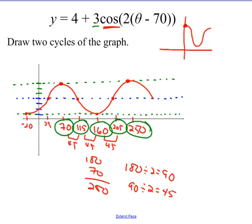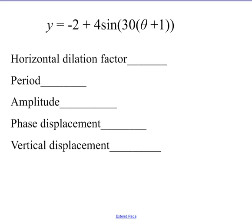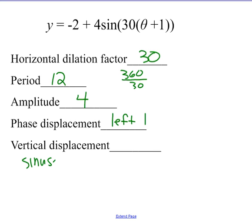Okay? Let's try one more. All right. So, horizontal dilation factor is 30. What does that mean for my period? I shrink 360. I divide it by 30, and I get 12. My amplitude is the vertical stretch. That's 4. My phase displacement is left 1. That plus 1, remember, will be backwards. And my vertical displacement, or I like to say sinusoidal axis, is going to be at negative 2.